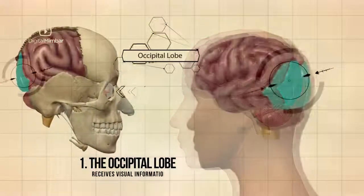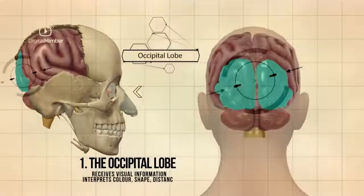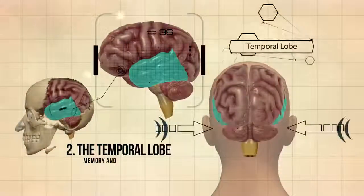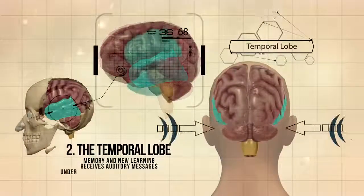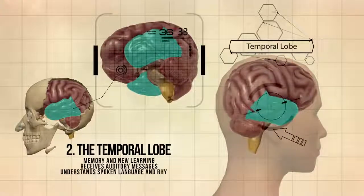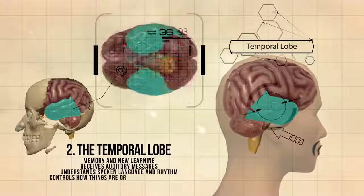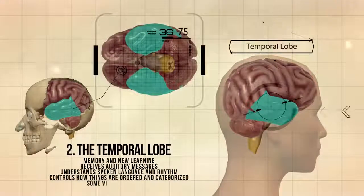The occipital lobe receives visual information, interprets color, shape, and distance. The temporal lobe is responsible for memory and new learning, receives auditory messages, understands spoken language and rhythm, controls how things are ordered and categorized, and some visual perception.